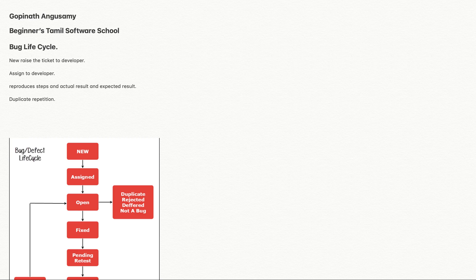Rejected — then defer and not a bug. If the tester raises something as a bug, but the developer says it is not a bug — this is the expected result — that is classified as not a bug. At the organization level, the product manager will verify it and move it.